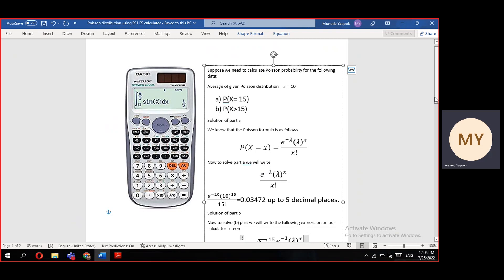As we know, the probability of Poisson distribution can be represented by the formula: probability of capital X equals small x, which equals e power minus lambda times lambda power x divided by x factorial.